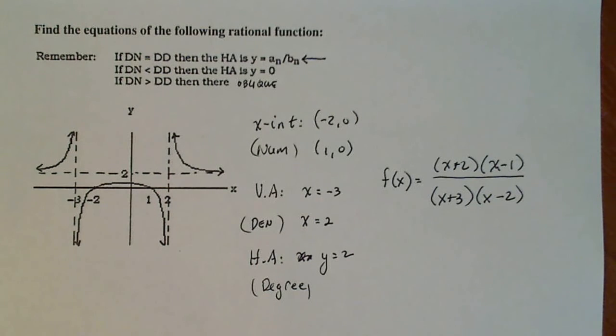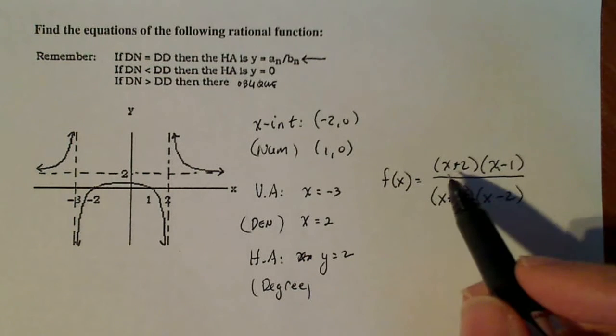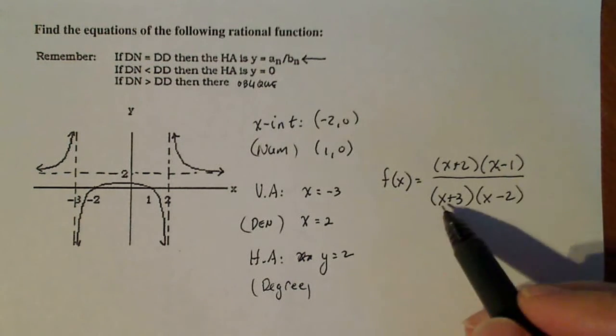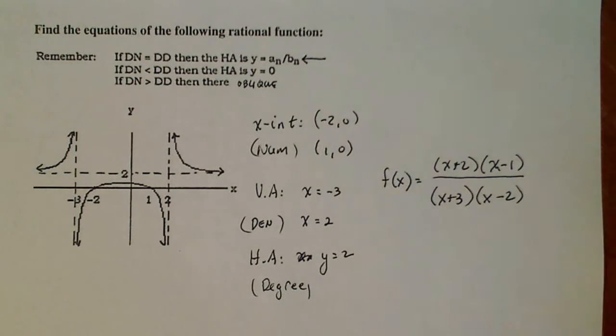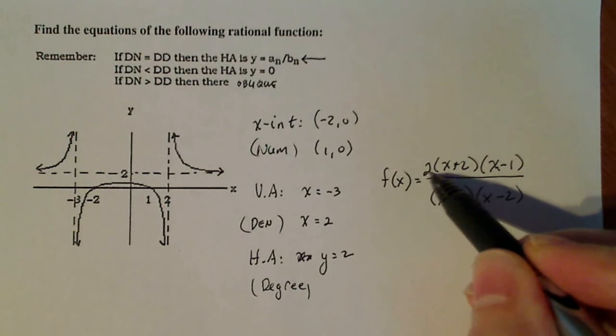So far, this is a pretty good equation right here. The only problem is that I believe if I take my ratio of leading terms, I'll get x squared in the numerator and x squared in the denominator, so I end up with a ratio of leading terms which is equal to one. So I want it to be two, so I'm going to stick a two up here.